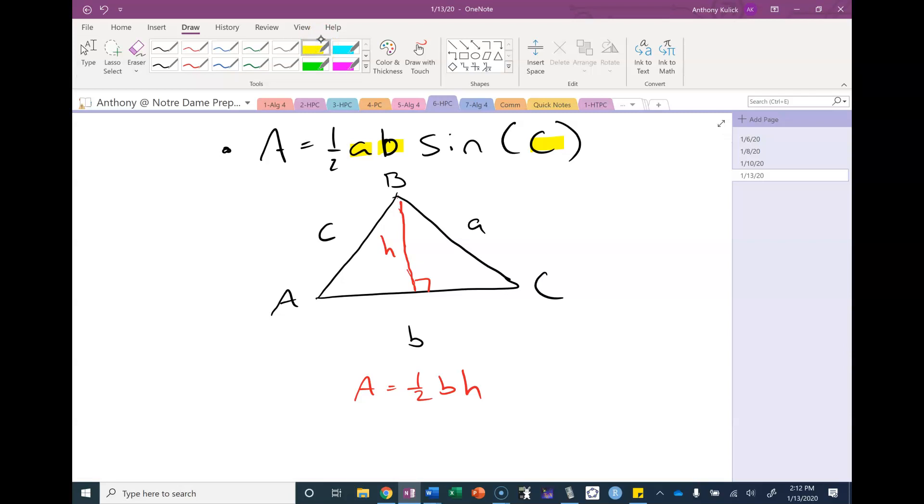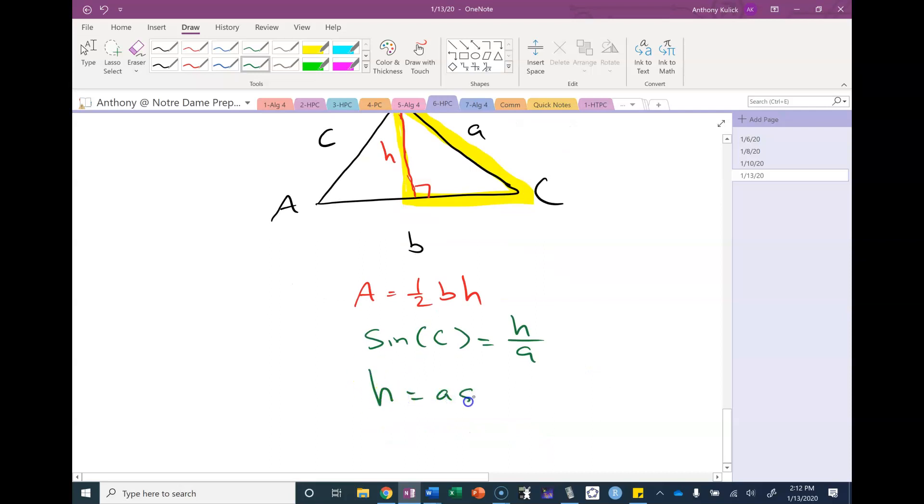So in drawing the height, we've created a right triangle. If we look inside this right triangle, we should be able to find an expression in terms of height involving angle C. You might say that sine C is equal to opposite over hypotenuse.